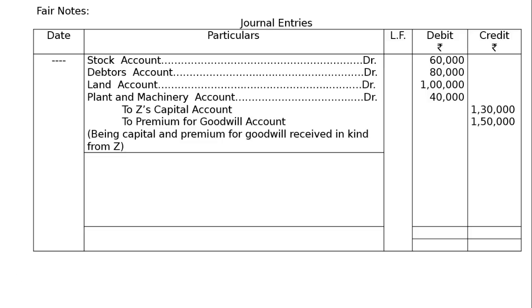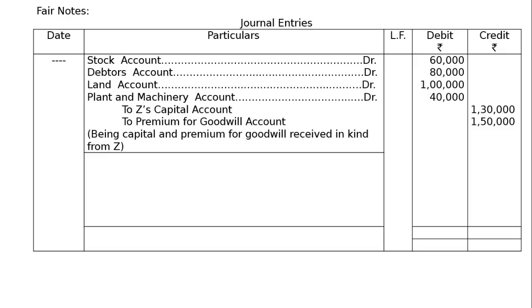This premium for goodwill will be transferred to X and Y in sacrificing ratio. Premium for Goodwill Account debited 1,50,000, To X's Capital Account 90,000, To Y's Capital Account 60,000, being premium amount received from the new partner transferred to old partners' capital accounts in sacrificing ratio. Both columns debit and credit amount to rupees 4,30,000 each.